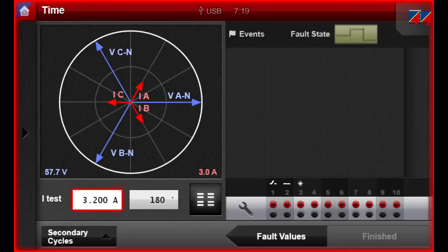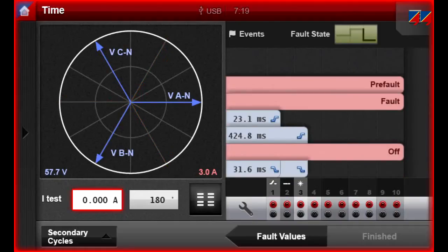CM control also supports typical protection testing sequences, such as pre-fault, fault, post-fault, and enables assessment of the relay's behavior.